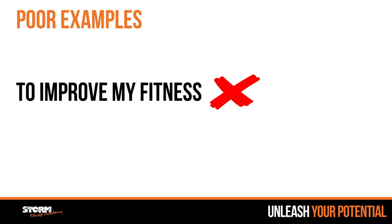Let's have a look at two poor examples. One poor example could be a goal simply written as 'to improve my fitness.' Well, everybody wants to do that — it's not terribly specific at all. We don't know what we're measuring, because if you think about your components of fitness, you've got cardiovascular fitness, body composition, strength, endurance, and flexibility. Which one of those is it that the person wants to work on? We need to establish that.